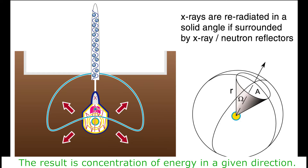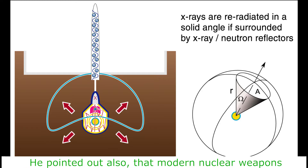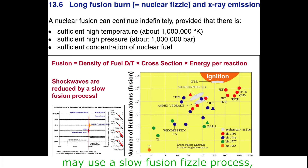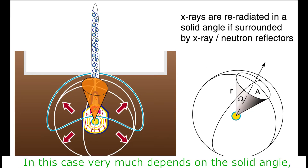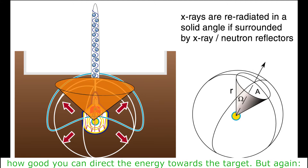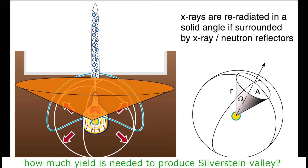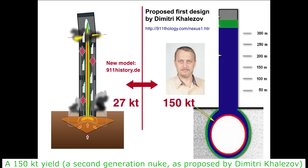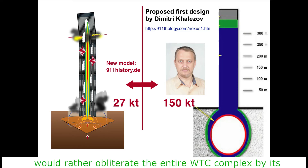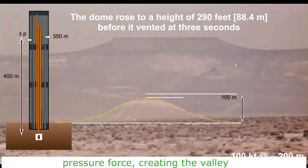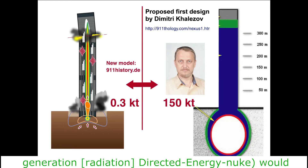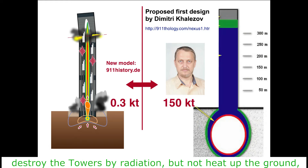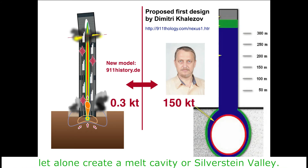The result is concentration of energy in a given direction. He also pointed out that modern nuclear weapons may use a slow fusion fissile process, making the energy output yield softer and longer. In this case, very much depends on the solid angle — how well you can direct the energy towards the target. But again, how much yield is needed to produce Silverstein Valley? A 115 kiloton yield, a second-generation nuke as proposed by Dmitry Khalezov, would rather obliterate the entire WTC complex by its pressure force, creating the valley. A 0.3 kiloton yield radiation device — a postulated fourth-generation radiation-directed energy nuke — would destroy the tower by radiation but not heat up the ground, let alone create a melt cavity or Silverstein Valley.